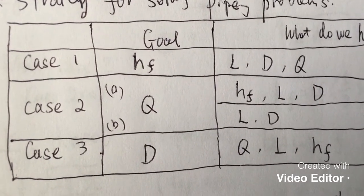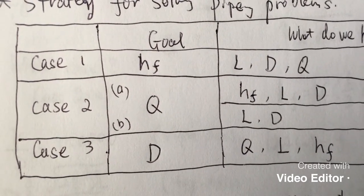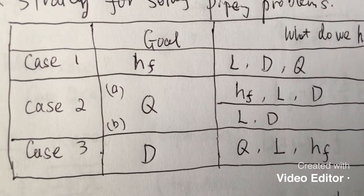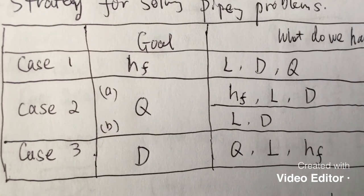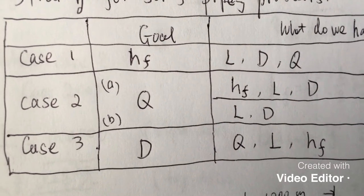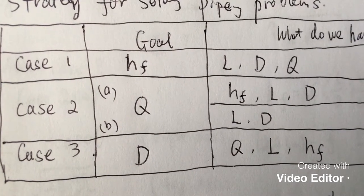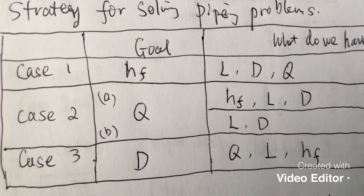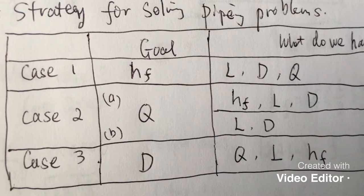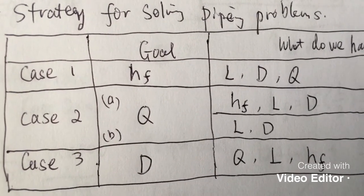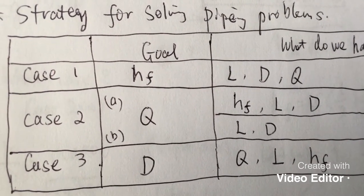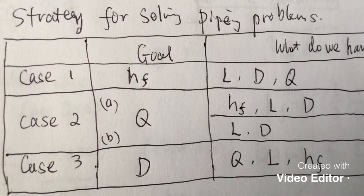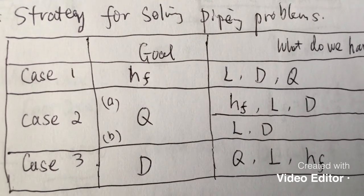Case 2B is more complicated. If you are not given HF — you only know L and D — and you're trying to find the flow rate, you can't use the bottom axis of the Moody diagram because you don't know Reynolds number, and you can't use the top axis either because you don't know HF. The solution is to use an iterative method, which I will show in an example later.